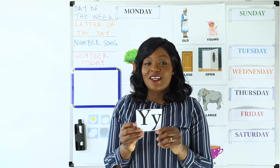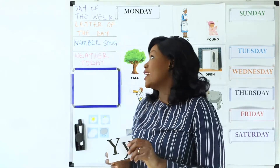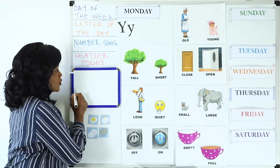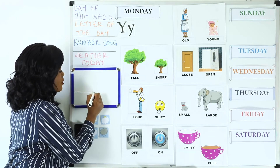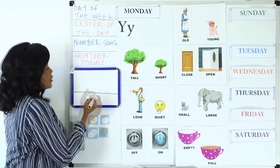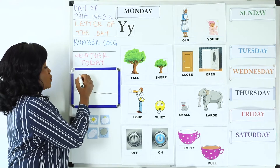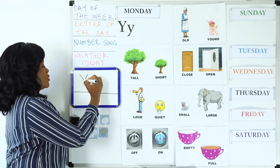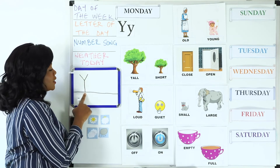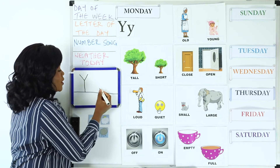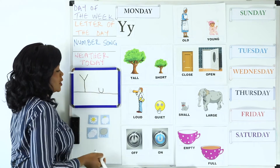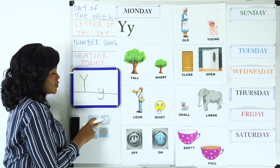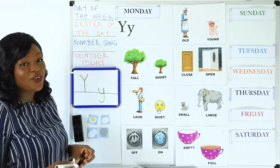Now we are going to practice how to write the letter Y. We'll bring our practice board. I will draw a straight line to show the line we have on our notebooks. To draw the uppercase Y, we draw two slanted lines that meet downwards, and then a straight line that goes down to the top of our line. For the lowercase y, we draw a continuous curve like a U, and then at the top we bring a line that goes downwards and curves. Practice your writing every day — that's how you get better.